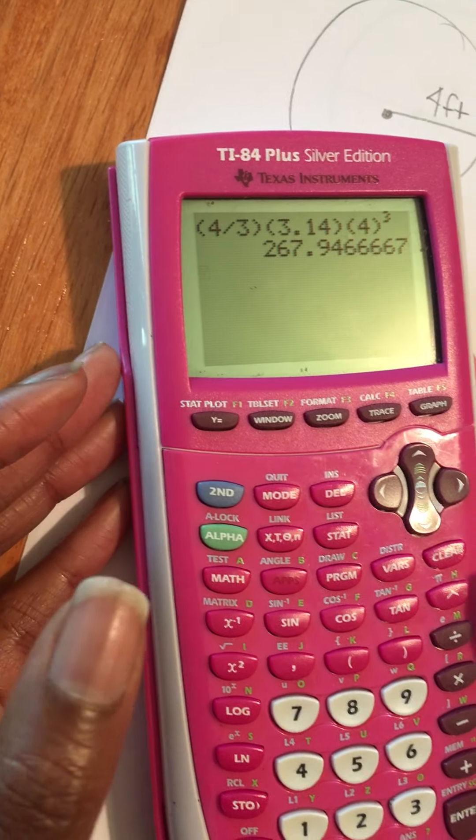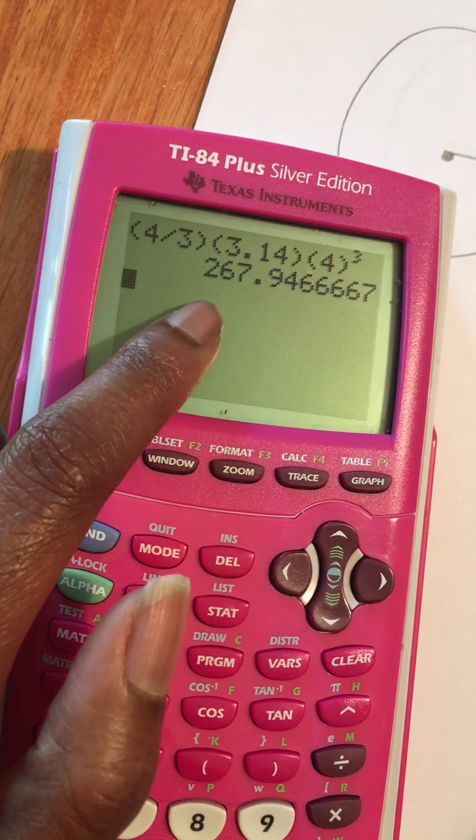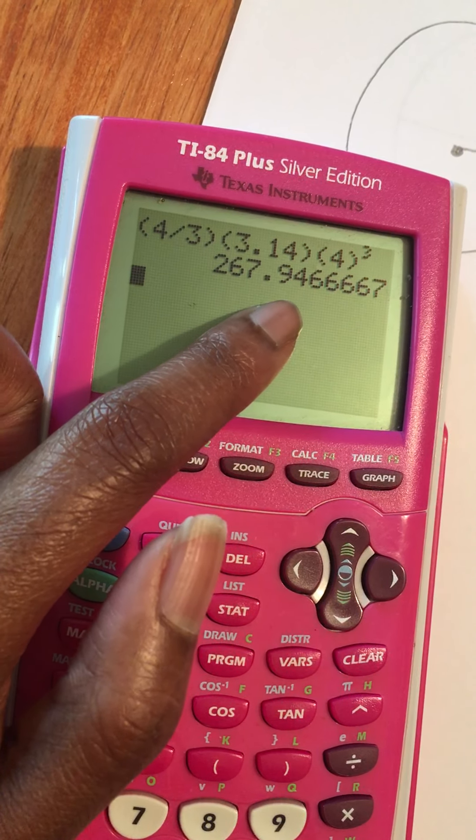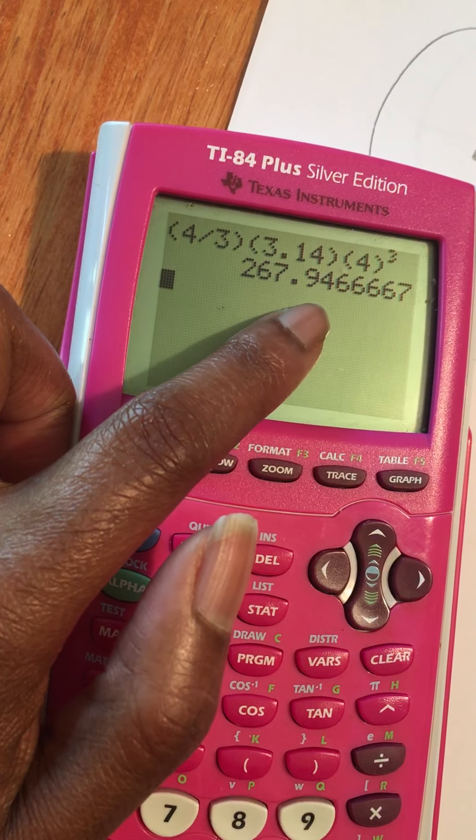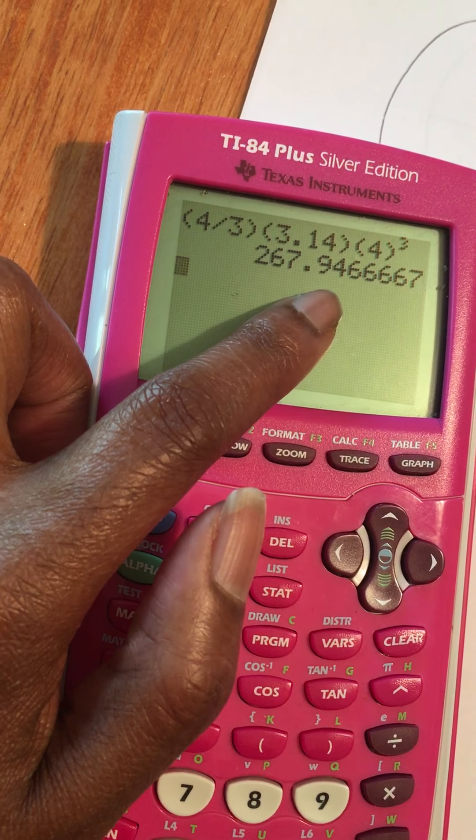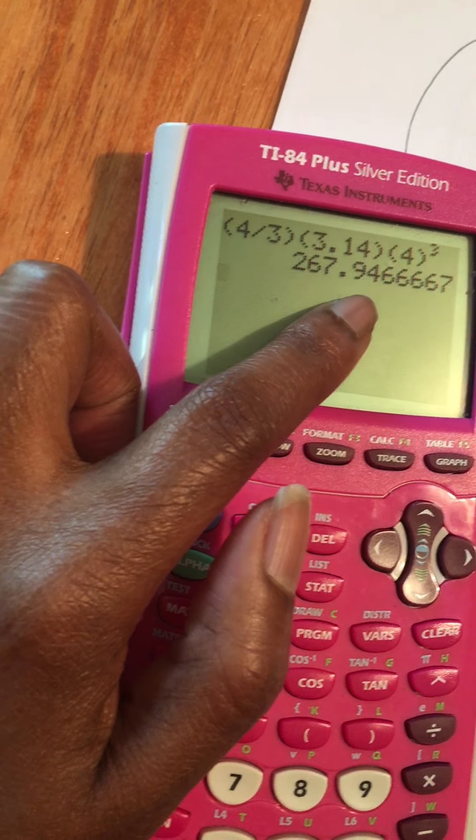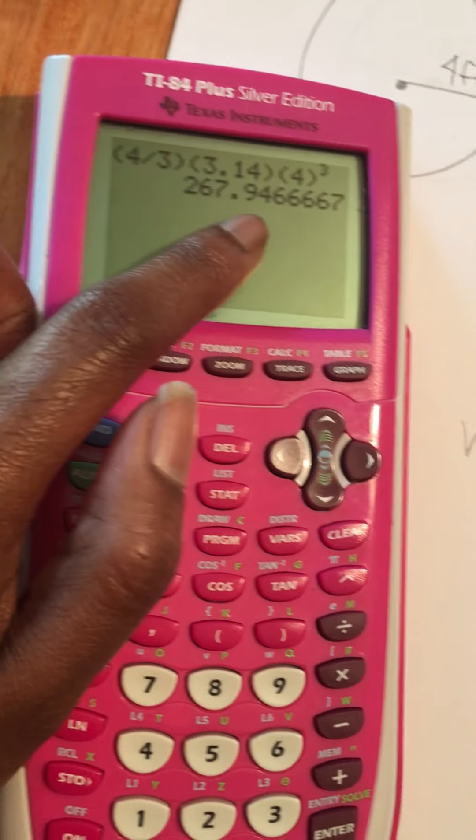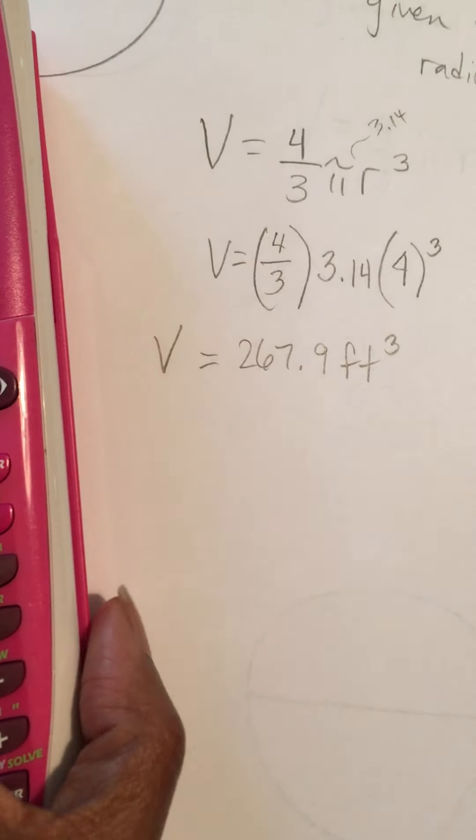Hit enter, and my volume is 267 point, I'm going to go one point past the decimal, so 267.9, my units was feet, so I'm going to write feet cubed.